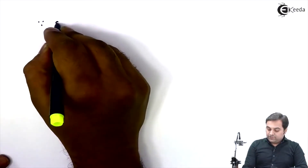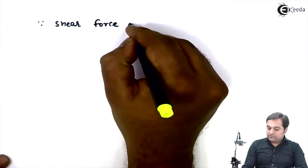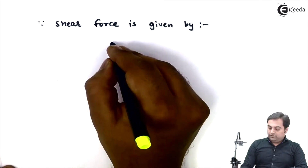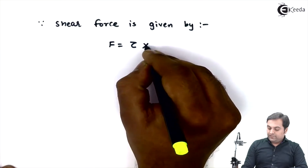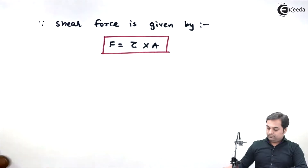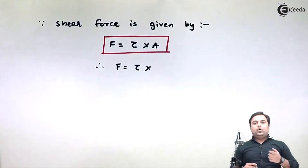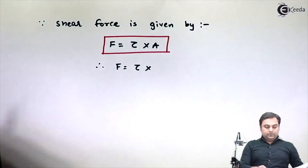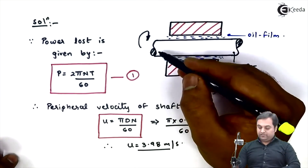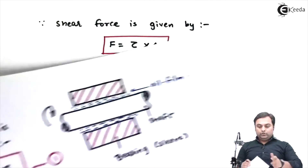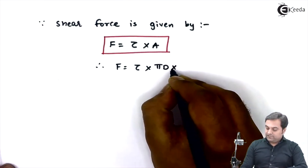Now after getting shear stress I'll find the shear force. Shear force is given by: force = stress × area. So F = stress × peripheral area, where the area is the circumference of the shaft multiplied by the length of the sleeve. As the shaft is shown in the diagram, oil is in contact over pi × D (circumference) multiplied by the sleeve length.